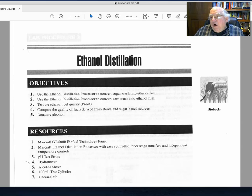In the previous procedure one, we saw where we could make a mash using cornmeal to make a solution that we could then add catalyst to and then add yeast to in order to begin the process of the sugars being turned into ethanol.